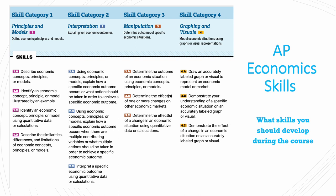The third skill category would be manipulation, which is to determine outcomes of specific economic situations. You determine the outcome of the situation using economic models or concepts, and you would determine the effects of one or more changes in economic markets, and you would also determine it using quantitative data or calculations.